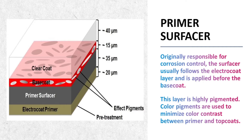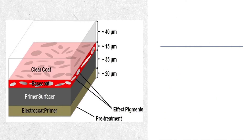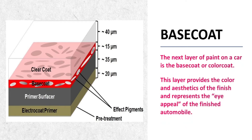A red oxide may be used under a dark color top coat. The next layer of paint on a car is the base coat or color coat. This layer provides the color and aesthetics of the finish and represents the eye appeal of the finished automobile. The integrity of this layer depends on its ability to resist weather, UV radiation and acid rain. Most commonly, an acrylate-based polymer comprises the binder system of base coats.